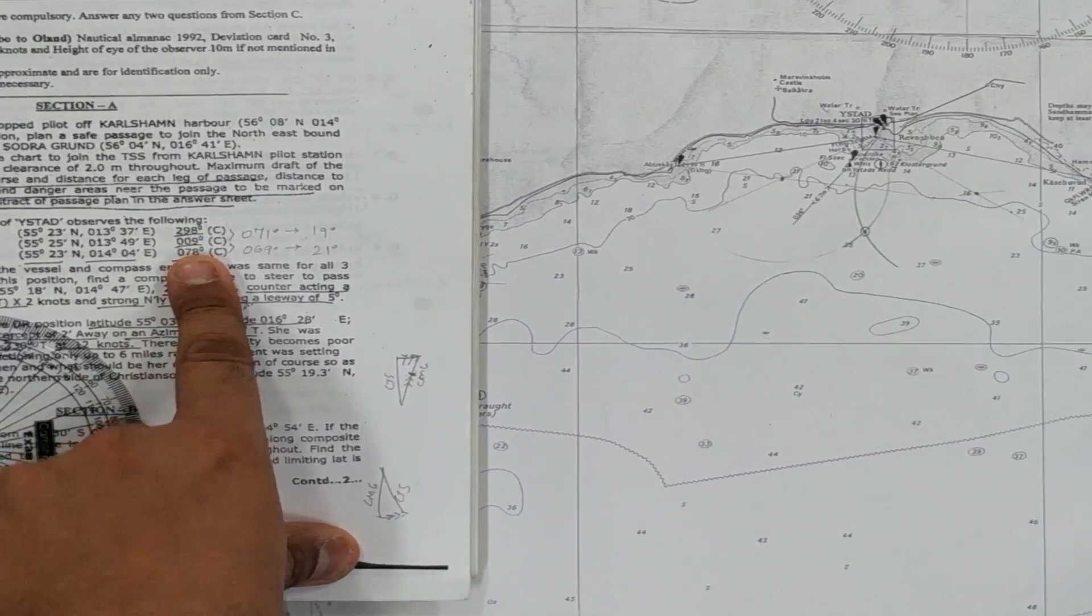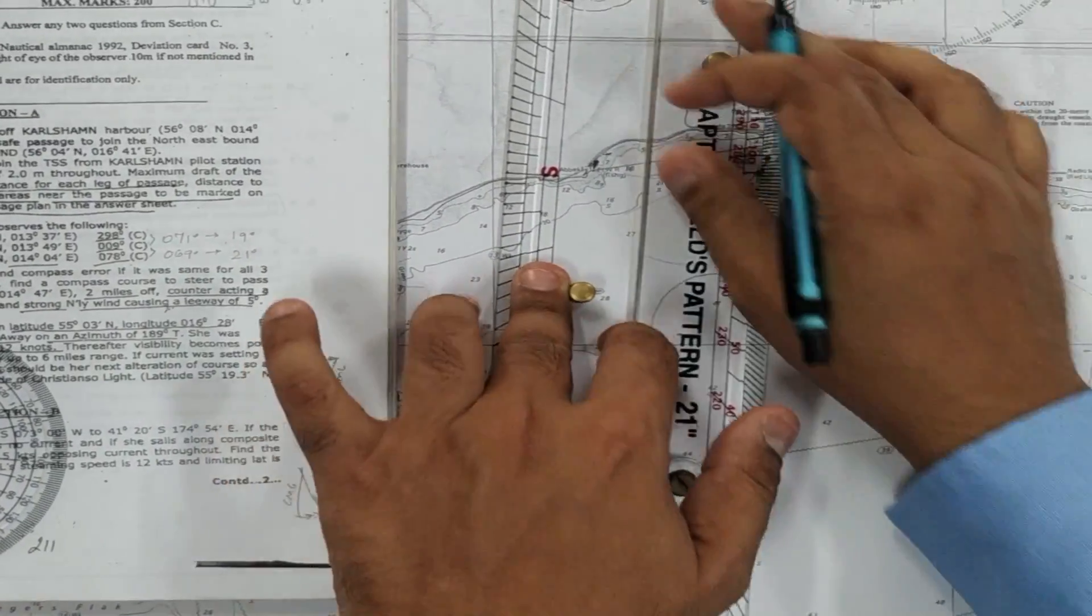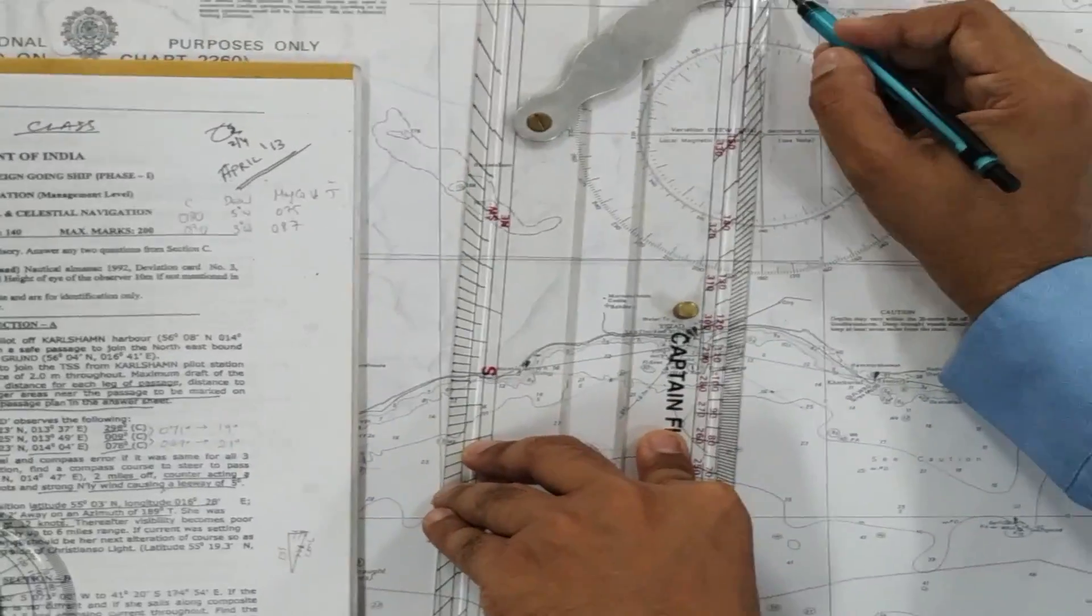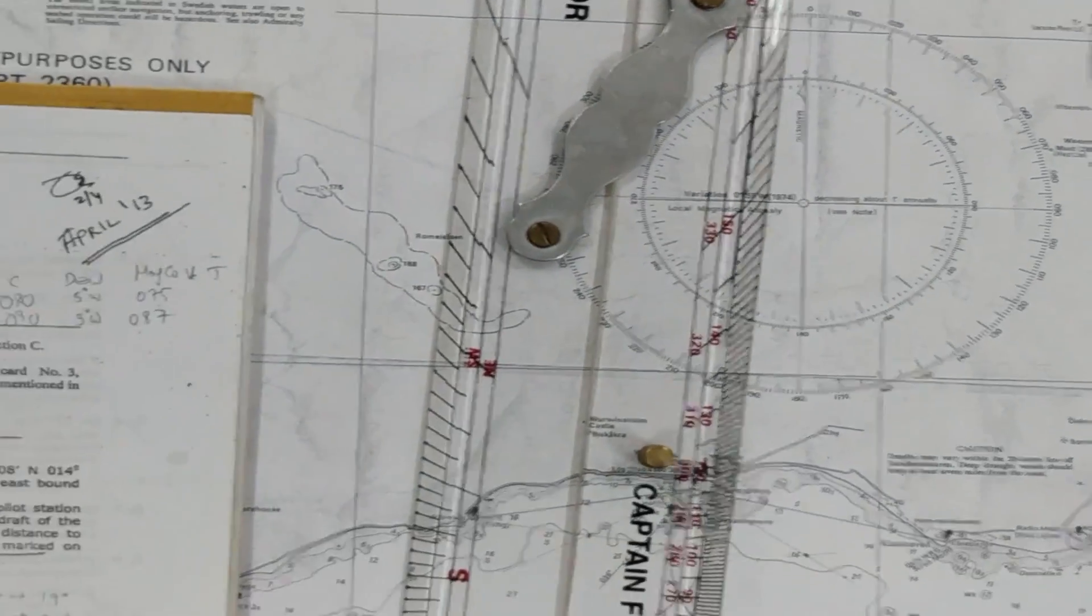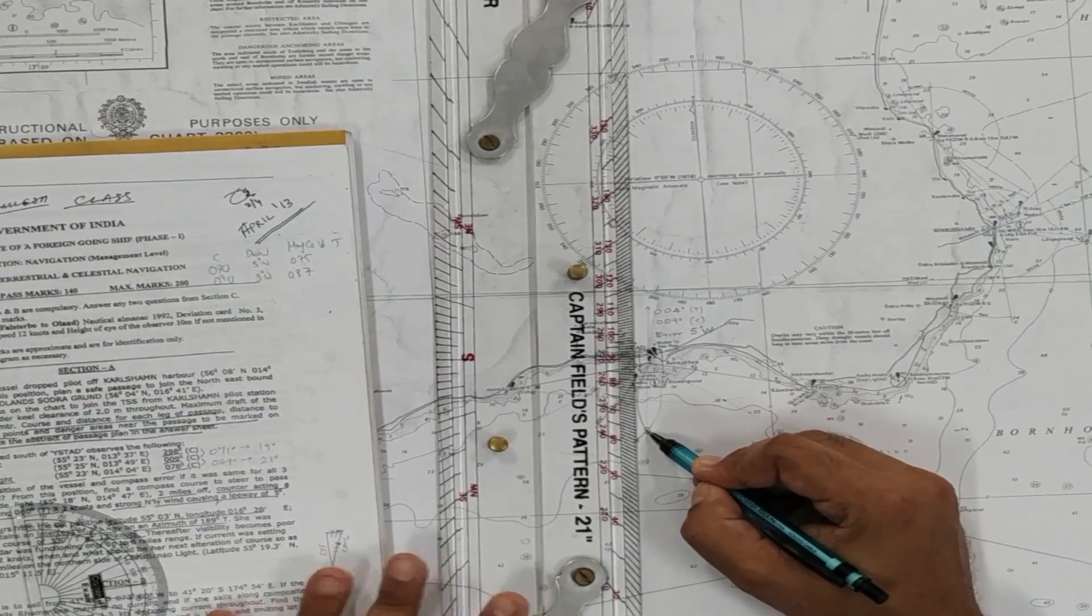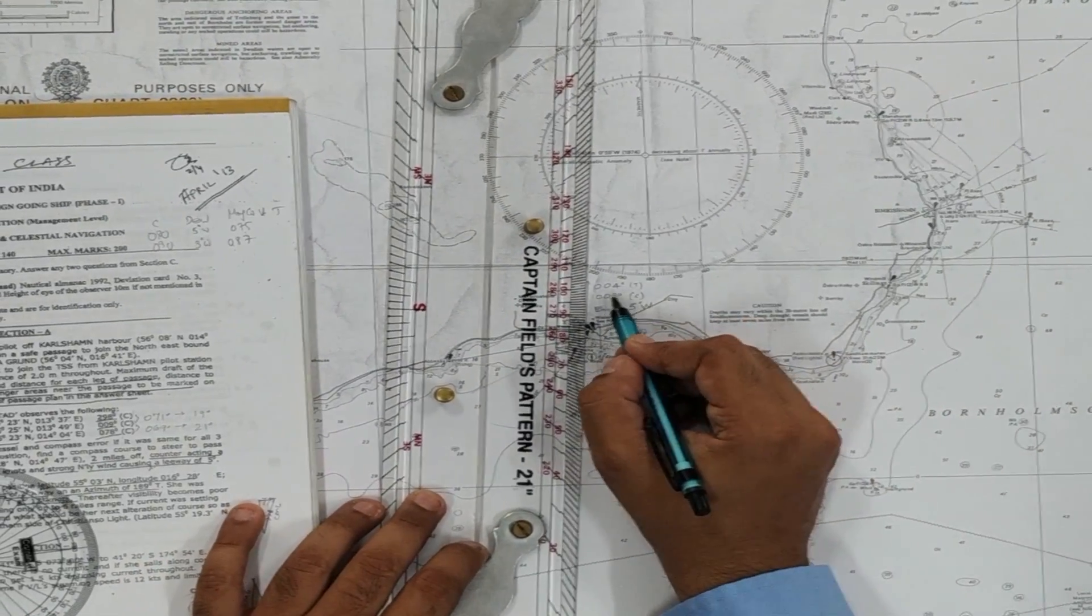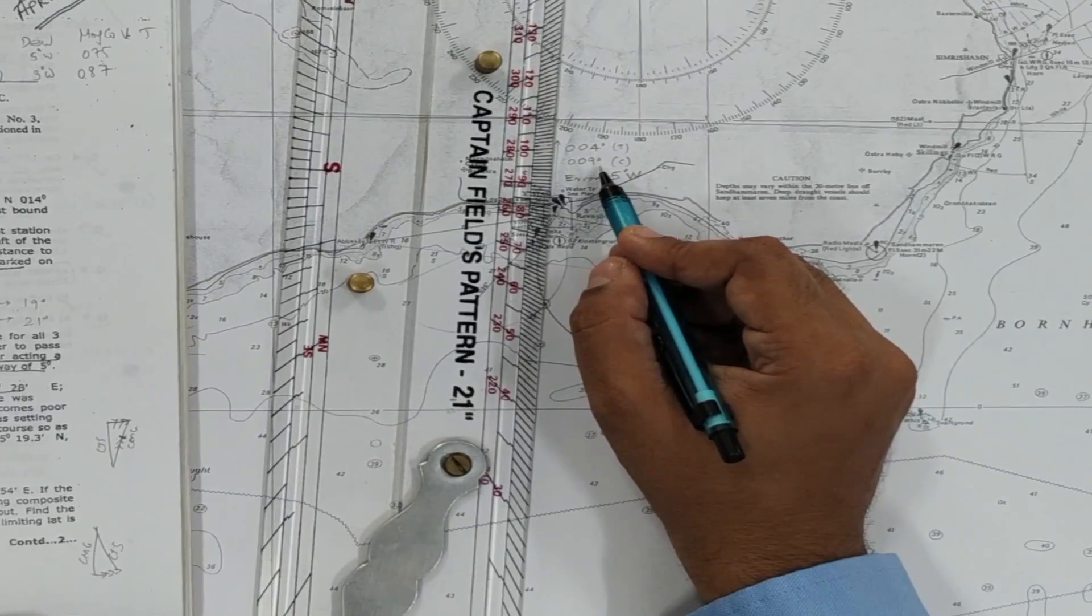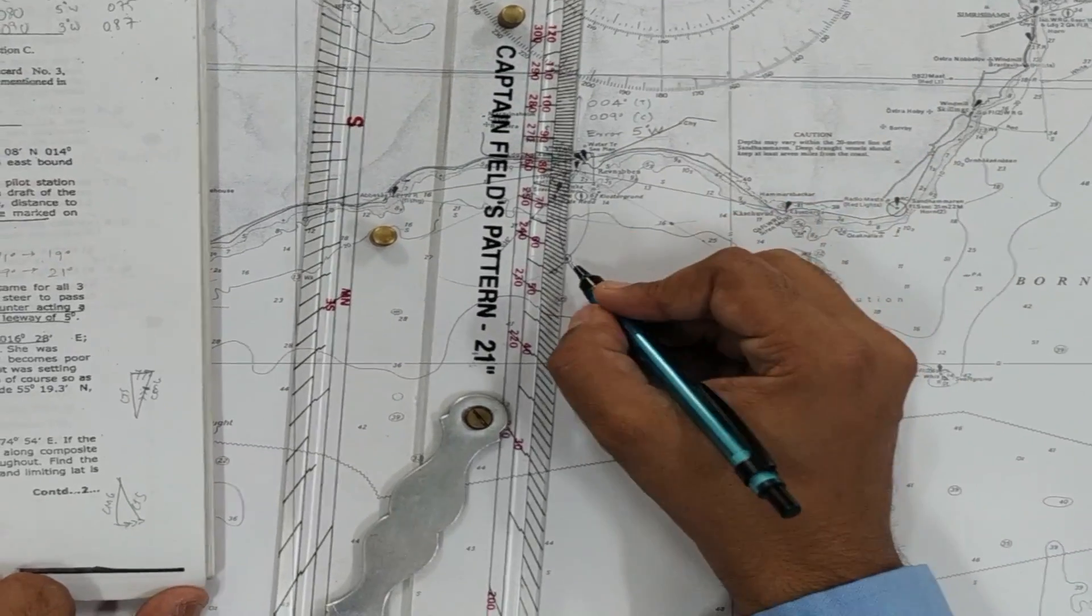Now this is a fix. We also have the compass bearings. So the next step for us is to take the compass bearing of the nearest object, that is Weistad. Weistad is bearing 004. So we should compare it with 009 and then we can get our compass error. So from this fix, the vessel is at anchor. We take the nearest light, that is Weistad, and we see that it is bearing 004 degrees true. But actually what we got is 009 degrees compass. So the compass error is 5 degrees, and the compass is more than the true, and that is why the error is west. So now we have compass error as 5 degrees west at this position.